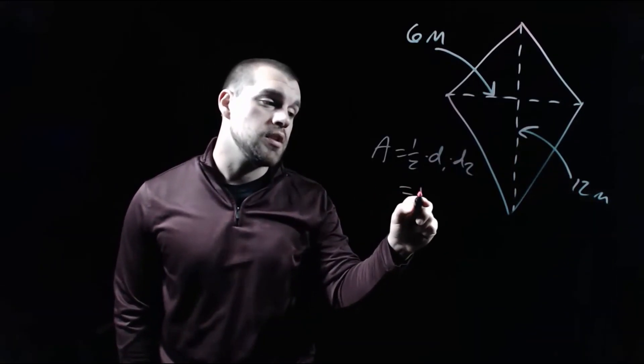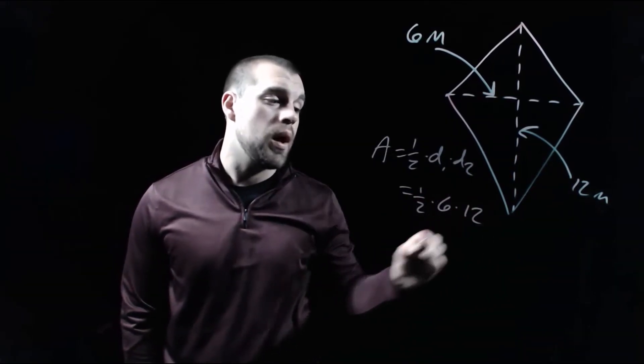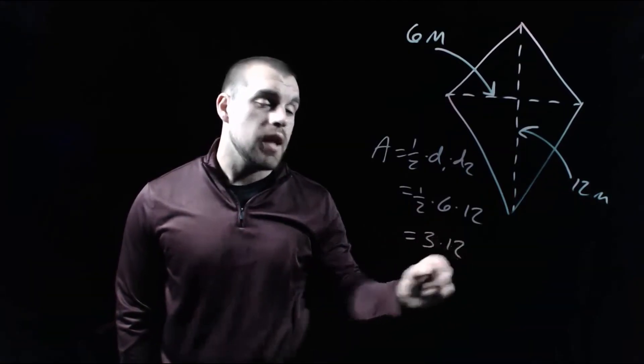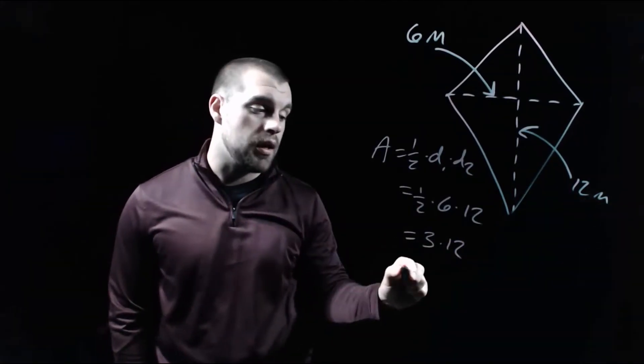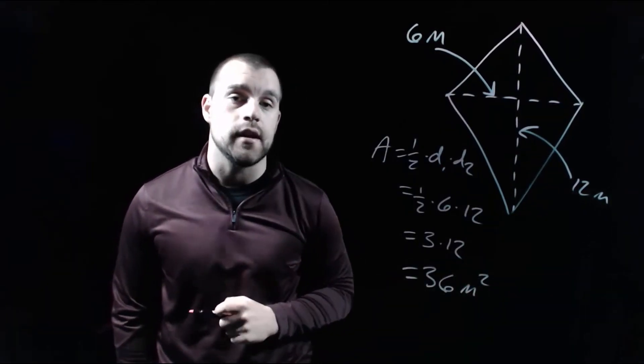So if we fill in the values that we have, we've got a half times six times 12. Well, half times six is three. And then if we take that three times our 12, we end up getting 36 meters squared as the area of this kite.